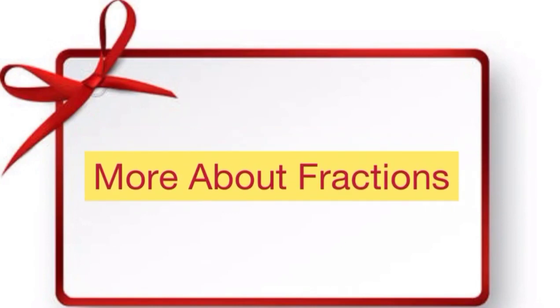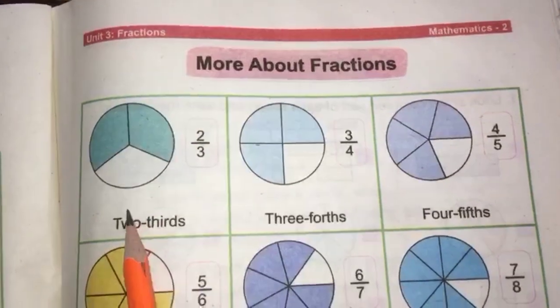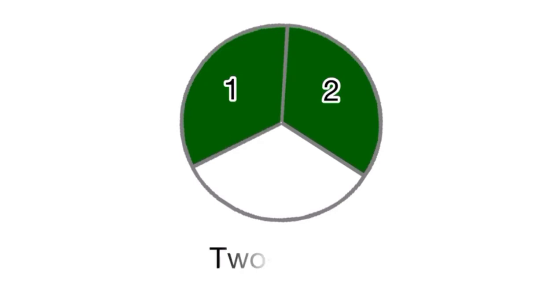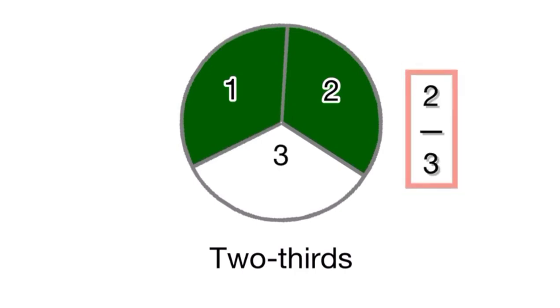In this topic we will learn more about fractions. There is a circle which is divided into three equal parts. Two parts are colored, so the name of this fraction is two thirds. We will write this fraction in numerical form like this.